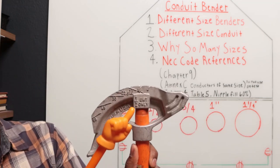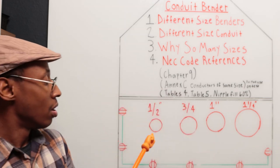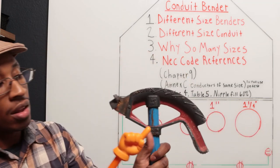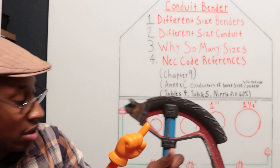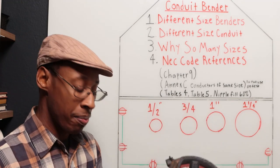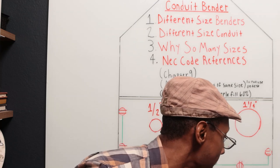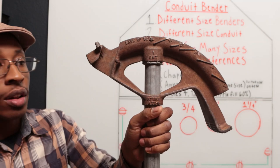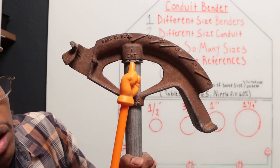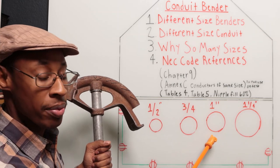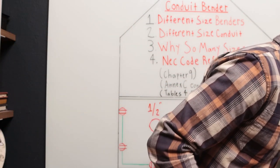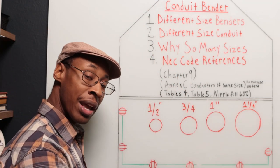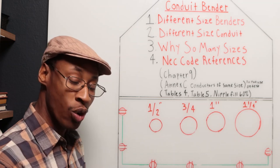So this half inch bender goes with this half inch pipe. This three quarter bender goes with the three quarter pipe. This one inch bender goes with the one inch pipe.